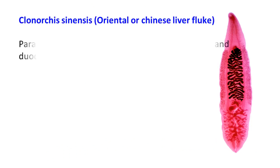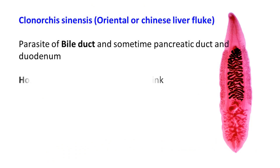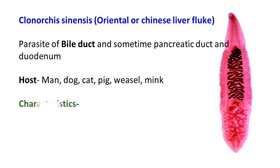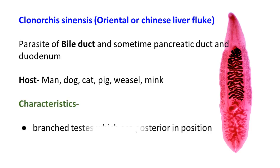Another parasite in this family is Clonorchis sinensis, also known as the oriental or Chinese liver fluke. It lives in the bile duct and has characteristic branched testes which are posterior in position.